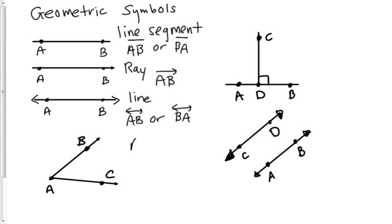The next thing we have here is an angle. There's three different ways we could name this angle. First you want to use the angle symbol and then you want to use the three letters. So B, A, C. A has to go in the middle because A is the vertex.